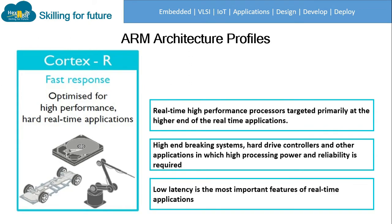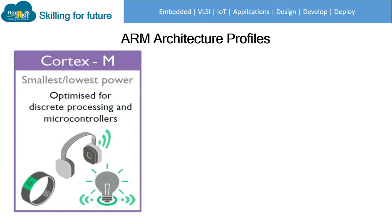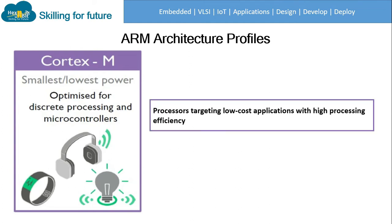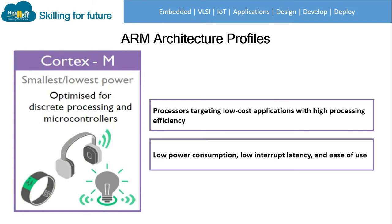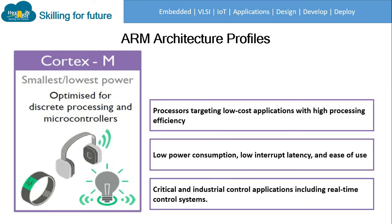Low latency is the most important feature of a real-time application. Cortex-M is the microcontroller-specific core that we are interested in — our internship will revolve all around this core. Cortex-M processors target low-cost applications with high processing efficiency, low power consumption, low interrupt latency, and ease of use in critical and industrial control applications including real-time control systems.